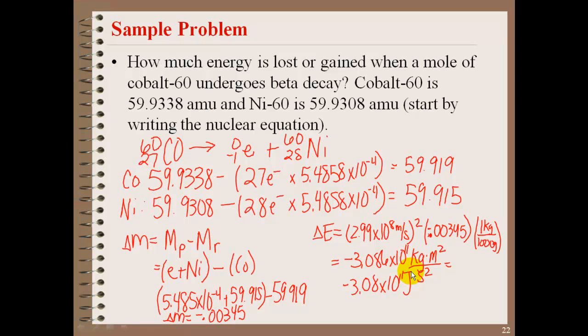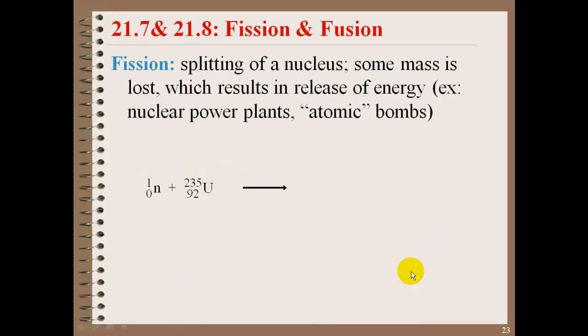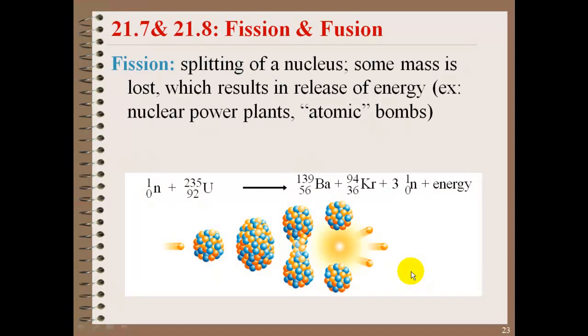Last thing I just want to discuss real quick is the fission and fusion. Fission is a process where they take an atom and they split it into new atoms by bombardment. So we'll have a loss of mass. This loss of mass will also result in release of energy. So you'll notice if you take uranium-235, bombard it with a neutron, you'll get two new products and energy, along with a few neutrons, which are now then available to hit other uranium atoms to create a whole chain reaction.